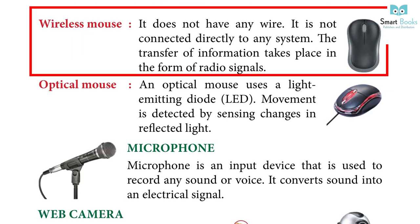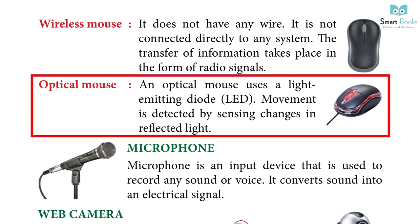Wireless mouse: It does not have any wire and is not connected directly to any system. The transfer of information takes place in the form of radio signals. Optical mouse: An optical mouse uses a light-emitting diode (LED), and movement is detected by sensing changes in reflected light.